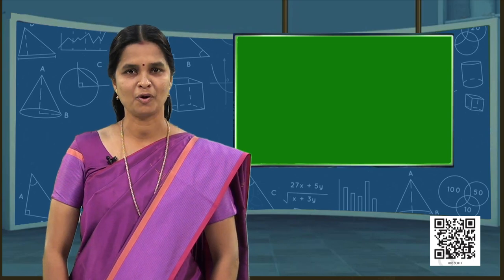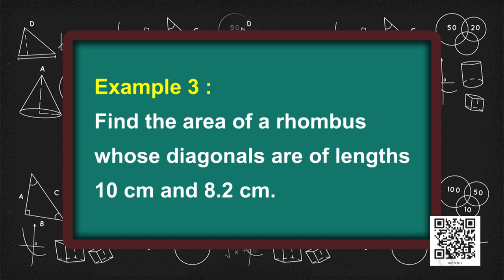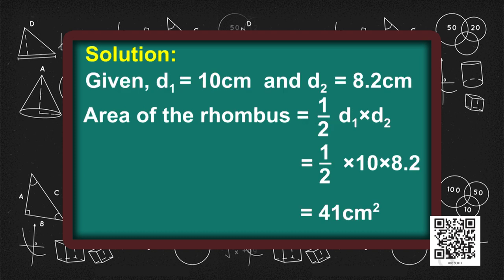Example 3: Find the area of a rhombus whose diagonals are of length 10 centimeters and 8.2 centimeters. D1 equals 10 cm and D2 equals 8.2 cm. Area of rhombus equals half into D1 into D2, which equals half into 10 into 8.2, which equals 41 centimeter square.